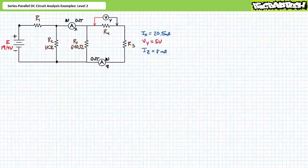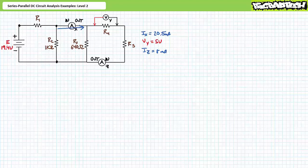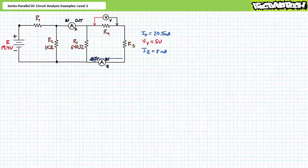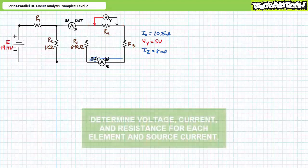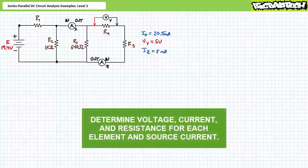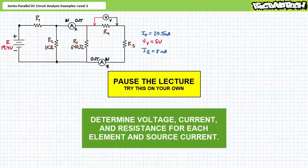Our last illustrated example features a 19.4 volt source and a series parallel combination of five elements: unknown resistor R1, R2 of 1 kilo ohm, R3 of 640 ohms, and R4 and R5 both unknown. Additionally, instrumentation at the following locations yields these values: ammeter X indicates 20.5 milliamps of current traveling in a specific direction, voltmeter Y indicates a 5 volt drop positive to negative left to right across R4, and ammeter Z indicates 8 milliamps of current traveling in the indicated direction. We're being asked to solve for the voltage drop across each element, the current through each element, the source current, and unknown resistors R1, R4, and R5. Pause the lecture and try this on your own. If you're tracking, you should have obtained the following results.